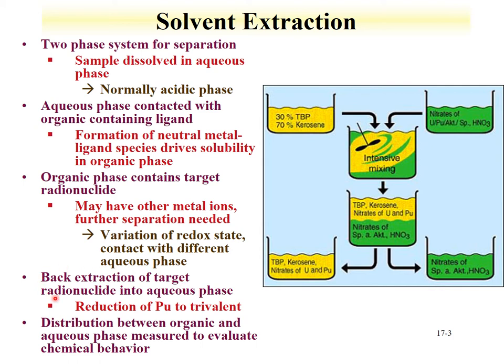This is done in the PUREX process for plutonium, where plutonium(IV) and uranium(VI) are extracted to the organic phase. The plutonium is then reduced, and trivalent metal ions are soluble in the aqueous phase under the extraction conditions of the PUREX process. In that case, one can separate uranium and plutonium from most of the fission products and other actinides, separate them into an organic phase, then reduce the plutonium from tetravalent to trivalent state so it goes into an aqueous phase.